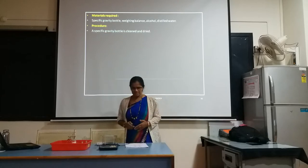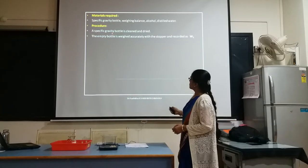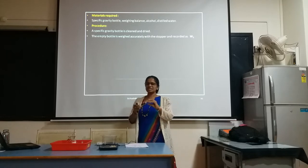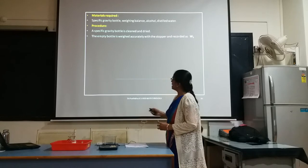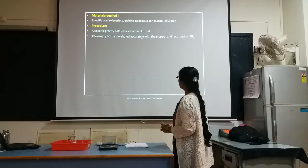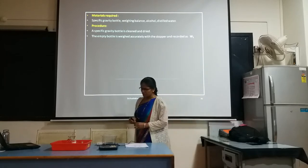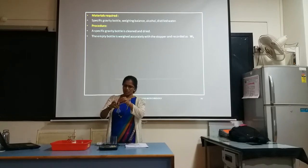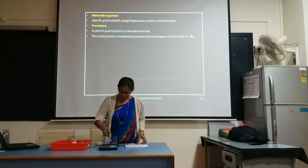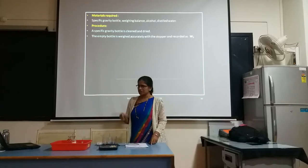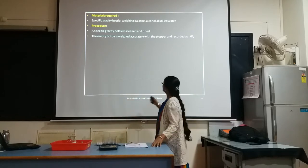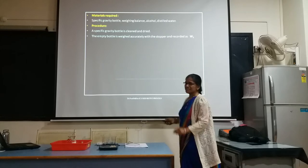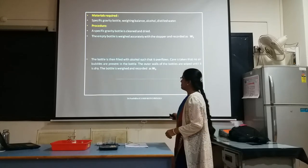Now let us go through the procedure step by step. First step: a specific gravity bottle is cleaned and dried. You need to take the specific gravity bottle, clean it carefully, and dry it using an air dryer or hand dryer. The empty bottle is weighed accurately with the stopper and recorded as W1. So this is your specific gravity bottle — you need to weigh this empty specific gravity bottle along with the stopper and record that weight as W1.